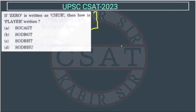Now again, this is an easy question from 2023. Zero is written as CHUR, so this is ZERO and this is written as CHUR. We have to find the relation.